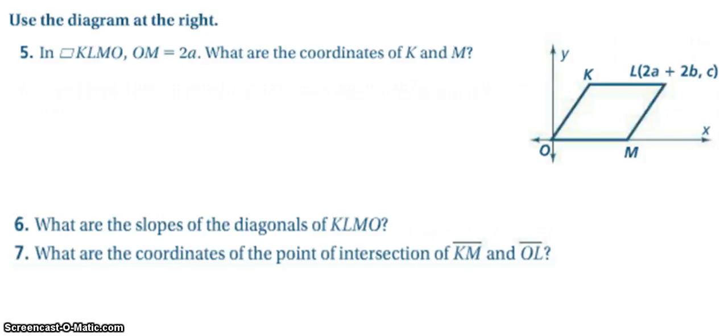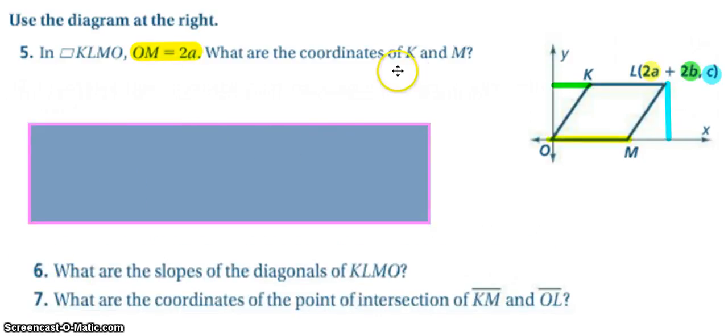Go ahead, try 5, 6, and 7 on your own, so pause the video. So we're looking to find the coordinates of K and M, and all I know is that OM is 2A. And then I'm given this other coordinate, but this other coordinate tells me everything else I need to know. Since I know that OM is 2A and to get to L I need to just go the extra amount that was in this distance over here, I know that this distance must be 2B.